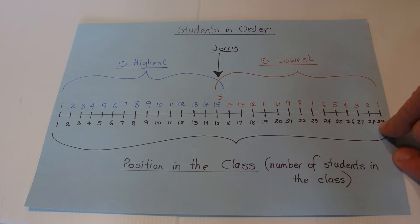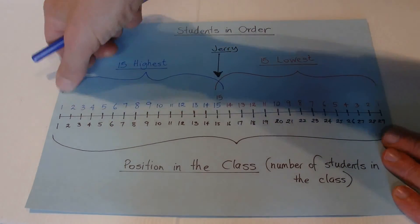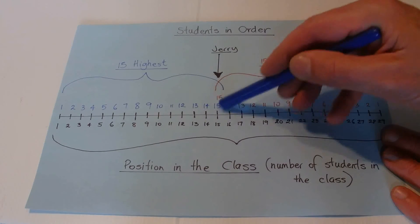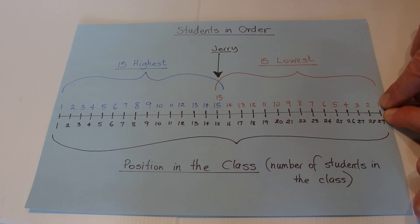From the question, we know Jerry is the 15th highest, so there's Jerry there. But Jerry is also the 15th lowest. So if we're saying there's only 29 students in the class, to prove that, if we start here and count back from 29, when we get to 15 we should get to Jerry.